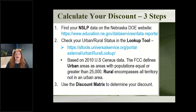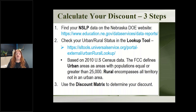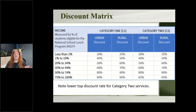USAC has on their website a lookup tool for finding out what your urban or rural status is, based on census data — currently the 2010 census, though it will be updated to 2020 data eventually. The cutoff between urban and rural is 25,000: if your population is 25,000 or more you're urban, and less than 25,000 you are rural. Then you look at USAC's discount matrix to figure out your discount percentage.